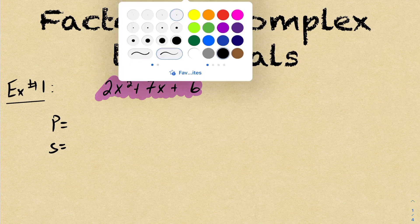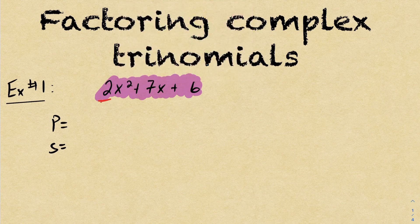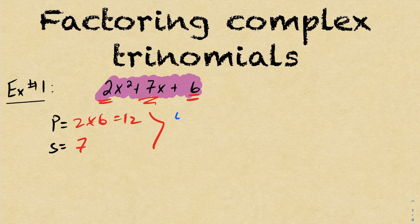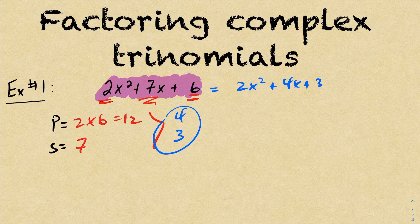To factor using decomposition, you're still going to calculate your product and sum. But this time, your product is going to be the product of your a value and your c value. So in this case, it's going to be 2 times 6, which is 12. And your sum is still your b value, which is 7. So now you have to think of two numbers that multiply to be 12 and add to be 7. Those are 4 and 3.